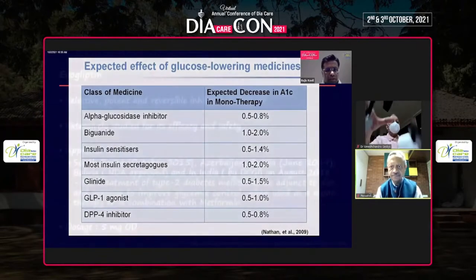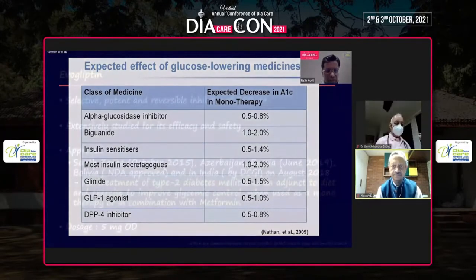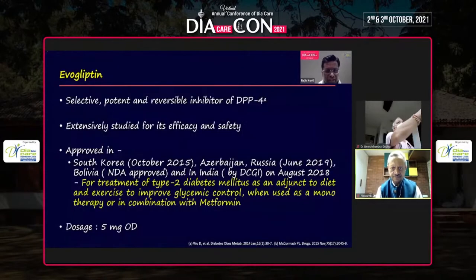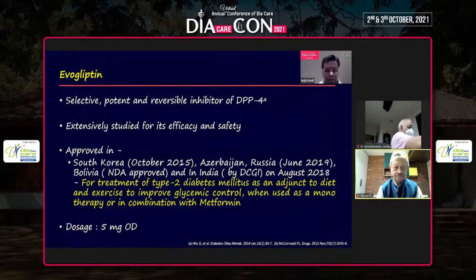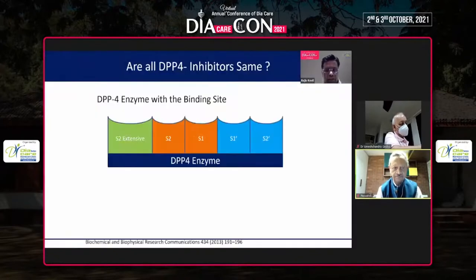Evogliptin is a very selective, potent, reversible inhibitor that has been extensively studied for its efficacy and safety. It has been approved in Azerbaijan, Russia, and South Korea for the treatment of type 2 diabetes as an adjunct to diet and exercise to improve glycemic control. Dosage is 5 mg once daily.